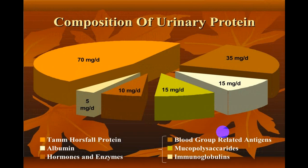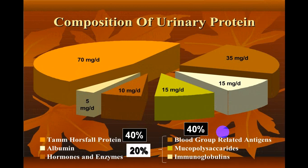Urine protein consists of different types. Tamm-Horsfall protein accounts for almost 40 percent, albumin accounts for just 20 percent, while other proteins — mucopolysaccharides, immunoglobulins, hormones, and enzymes — account for 40 percent. Since albumin is only 20 percent of total protein, and total protein detected is less than 150 milligram, 20 percent means less than 30 milligram — so above 30 milligram is abnormal.